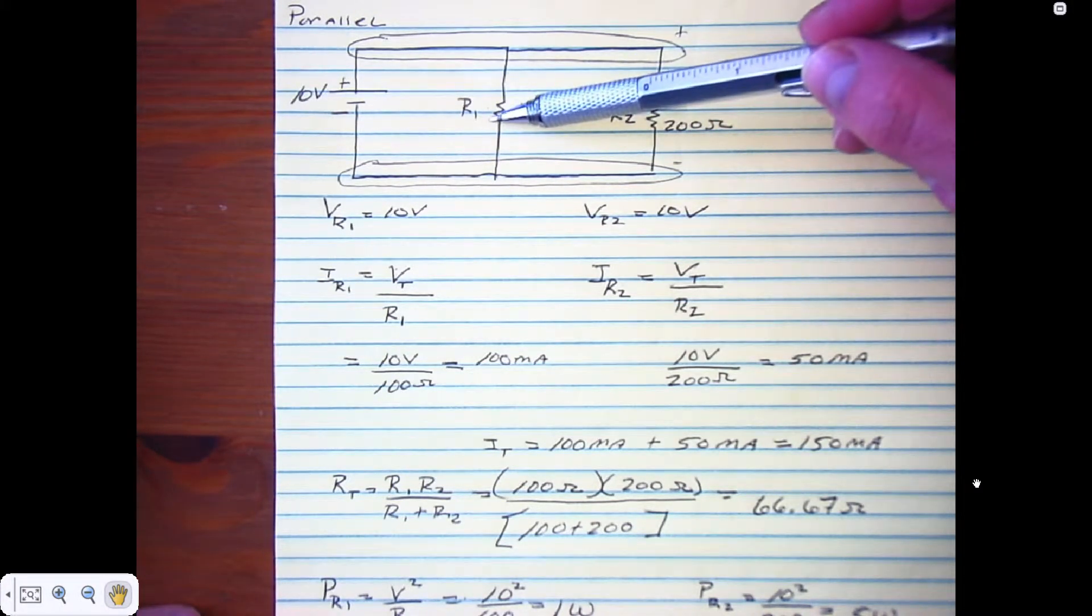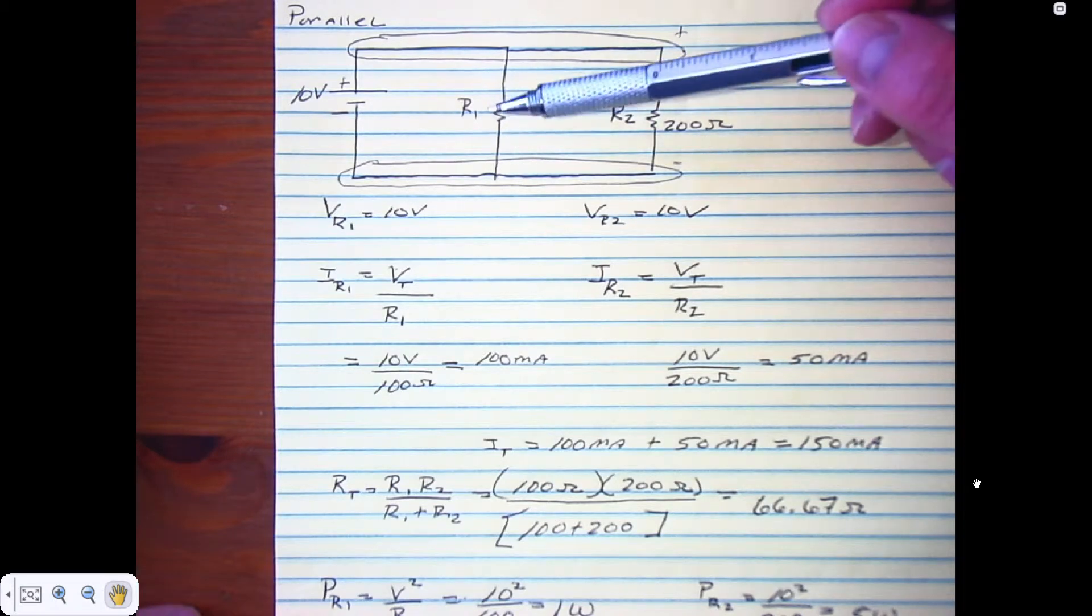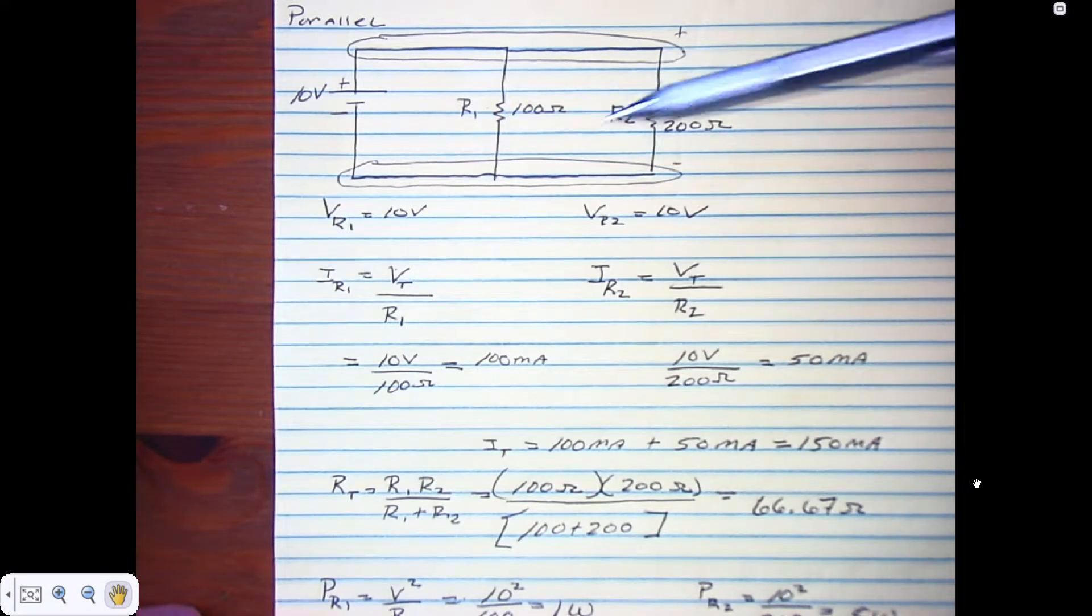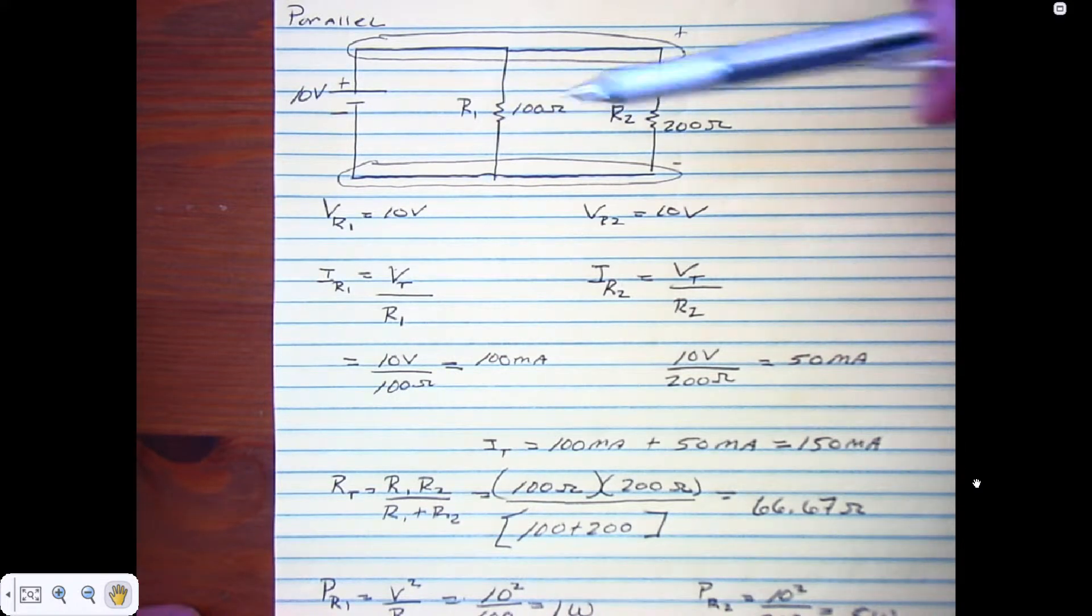Parallel circuits are found everywhere - in industry and residential applications. Think of these resistors as appliances like a microwave oven or an air conditioner.